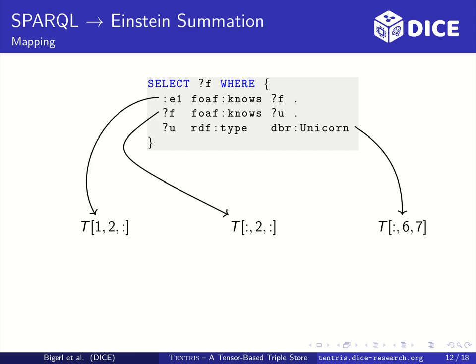In the second step the slices of the RDF tensor T are used as operands in an Einstein summation. The variables of the triple patterns are used as labels at the respective operands and the variables from the select clause are used as subscripts to the result. The non-zero entries of the resulting tensor represent the result of the SPARQL query.